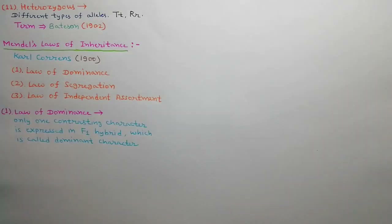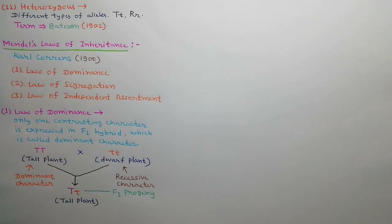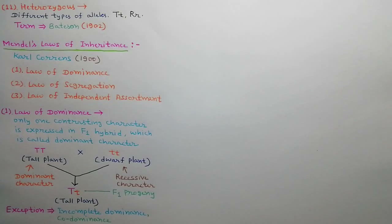According to the Law of Dominance, when two pure parents with contrasting characters are crossed, a hybrid F1 progeny is produced. Only one contrasting character is expressed in the F1 progeny, which is called the dominant character, while the other contrasting character is suppressed, which is called the recessive character. As shown in the diagram, a pure tall plant crossed with a pure dwarf plant produces F1 progeny that is tall. Tallness is the dominant character and dwarfness is the recessive character. Incomplete dominance and co-dominance are exceptions of the Law of Dominance.